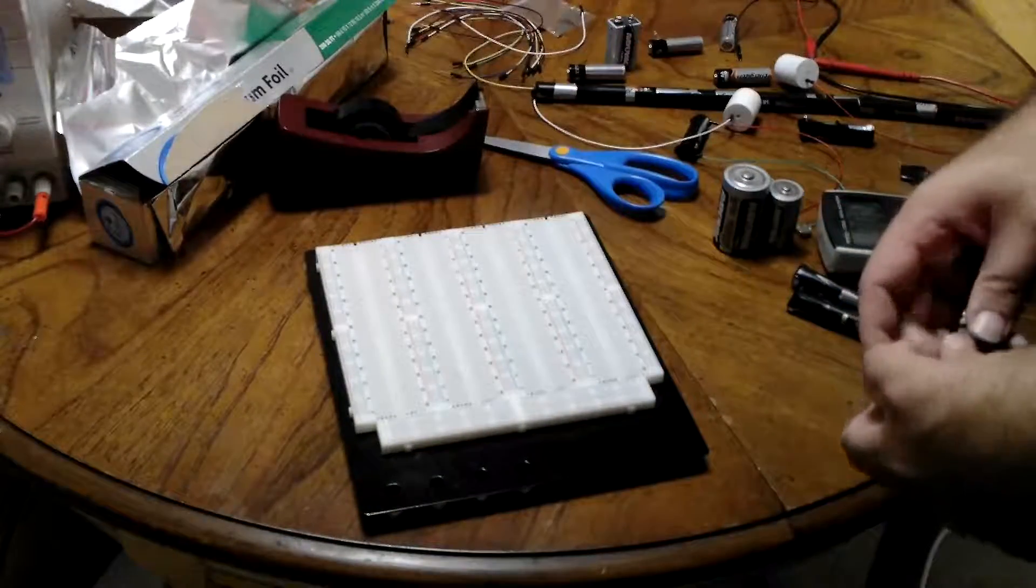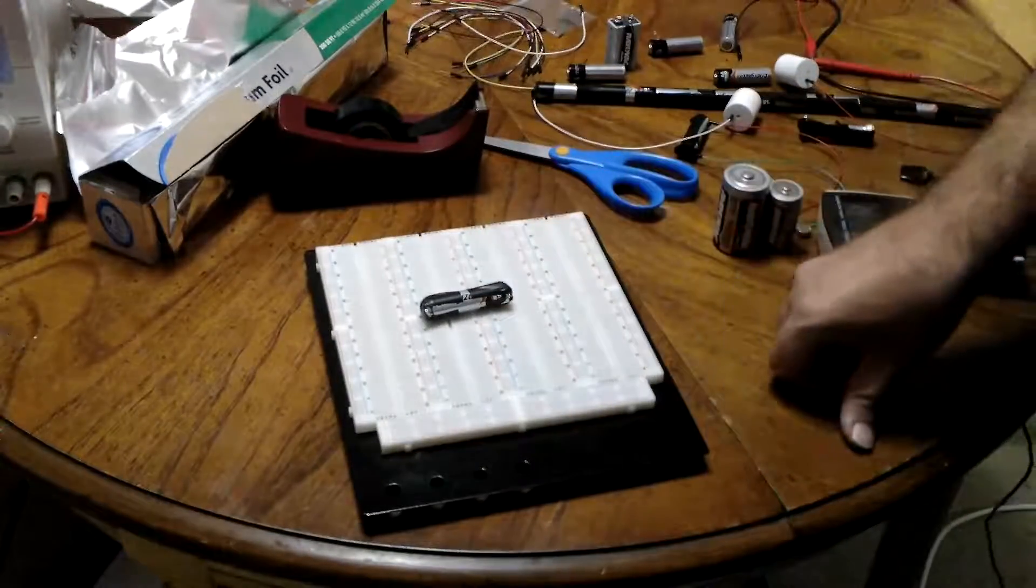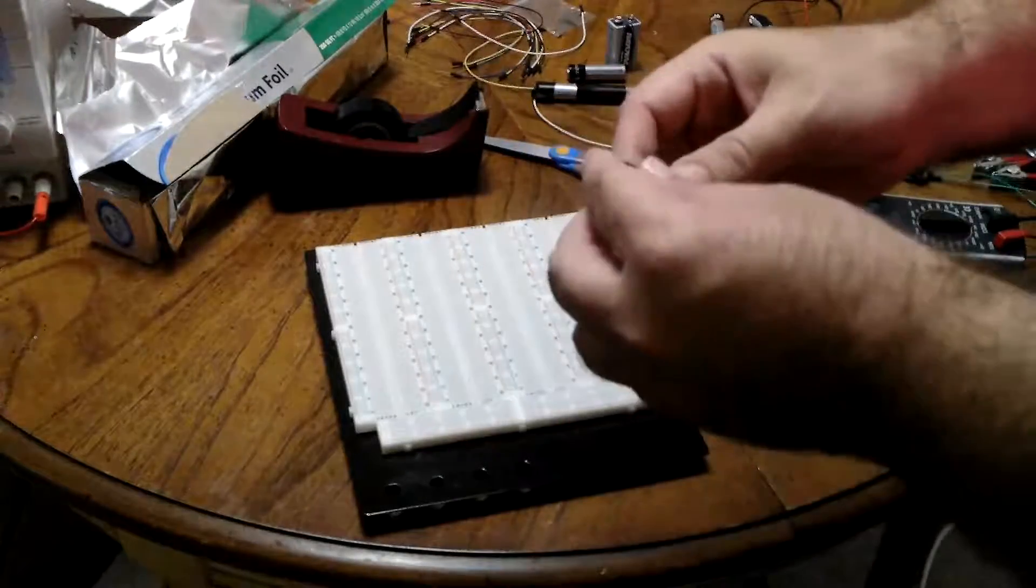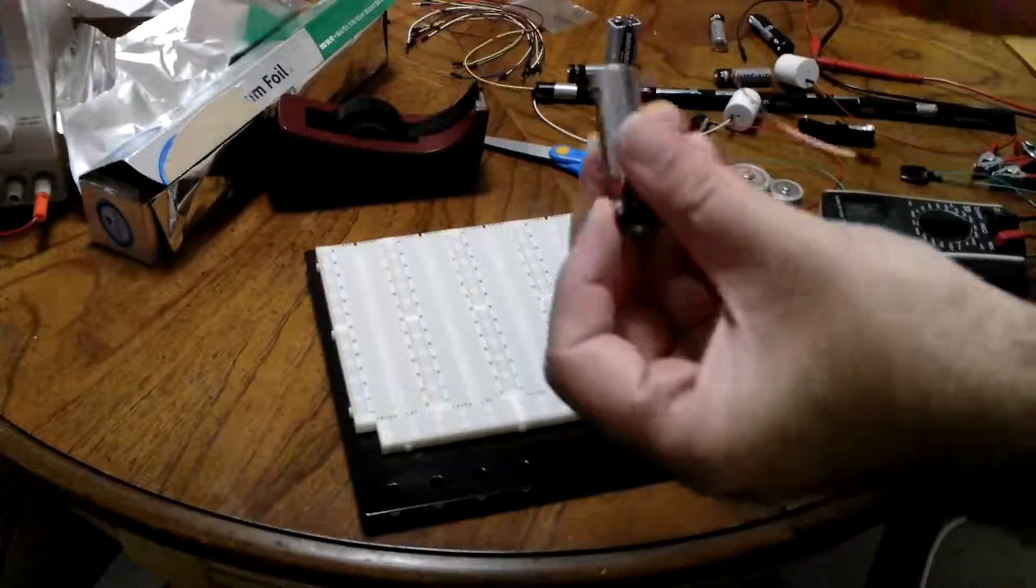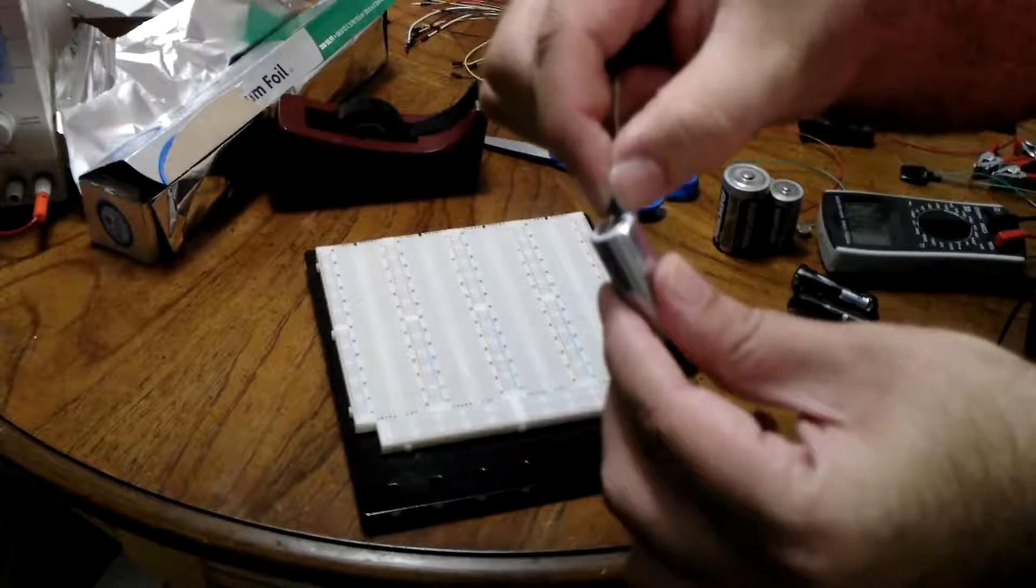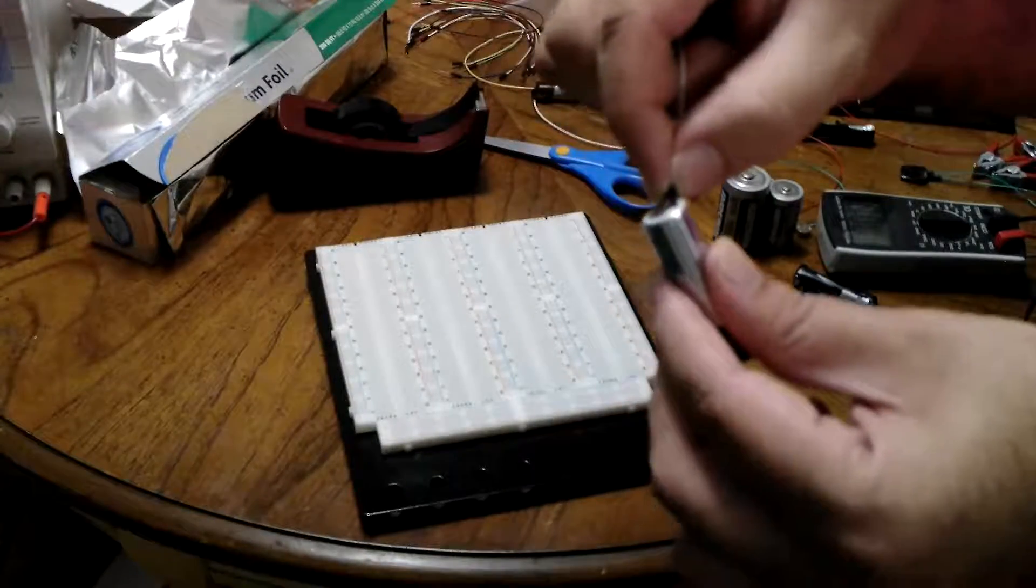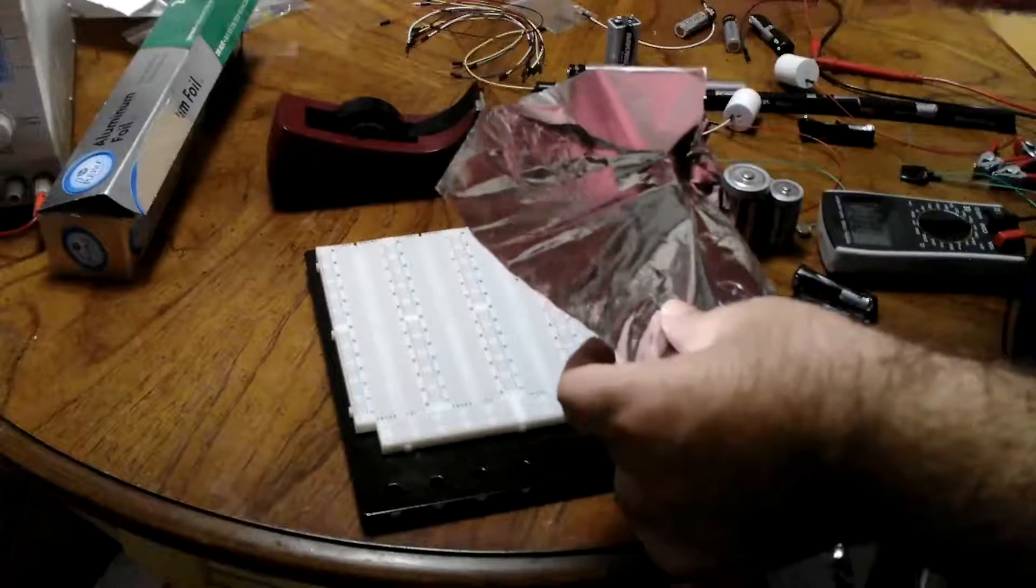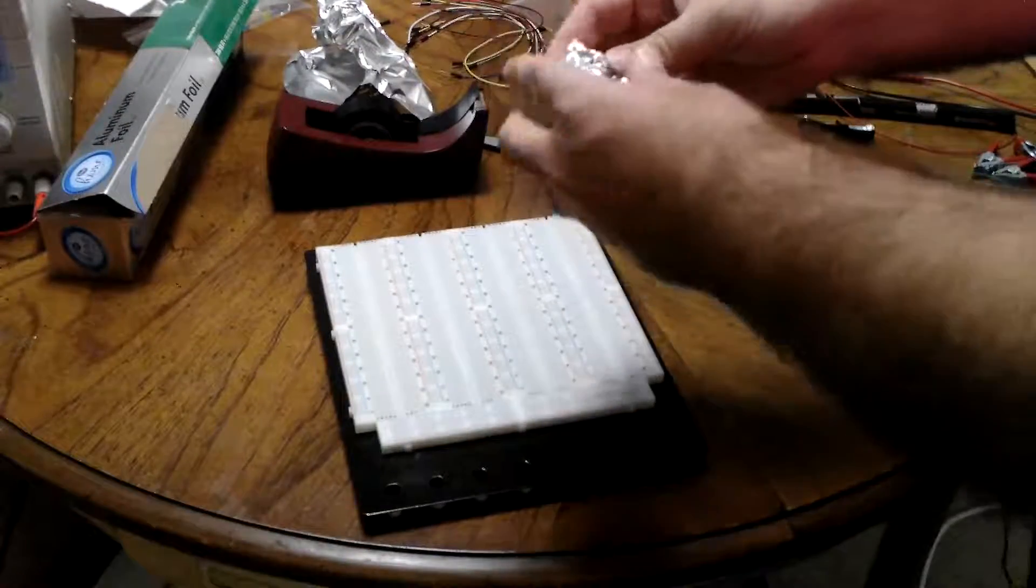So the first thing we're going to do is make a one battery pack. Stay with me, I have a reason. So you take a battery. Now, what we have to do is you basically are going to put the wire on here and you're going to tape it down with electrical tape. I have come up with this genius idea of aluminum foil. So very quickly, simply, easily, here's what we do.